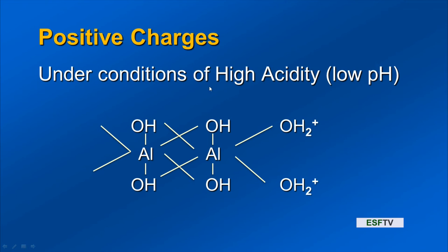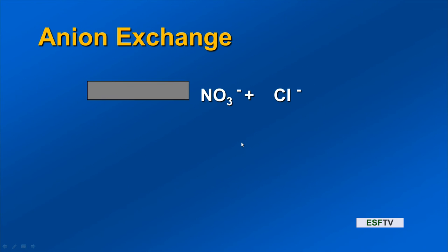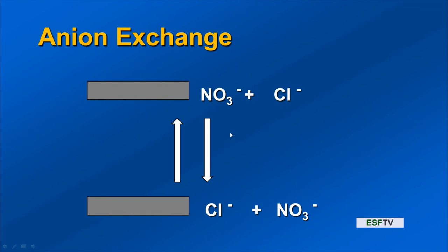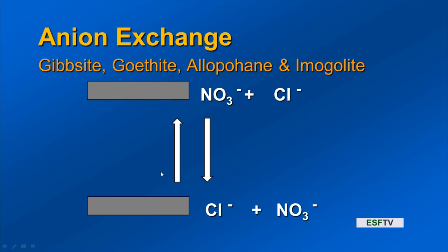Low pH, high acidity — we can get a net positive charge on iron aluminum oxides and hydroxides. That leads us to anion exchange. If we have a net positive charge on a colloid, anions will be adsorbed to the surface. Here's an example showing nitrate, an anion at minus-one, exchanging with chloride, also minus-one. Chloride can replace nitrate and the nitrate goes into solution — that's anion exchange, happening under conditions of high acidity and low pH. The colloids where this occurs: gibbsite, goethite, allophane, and imogolite — the iron aluminum oxides and hydroxides, and the non-crystalline silicates from volcanic soils.